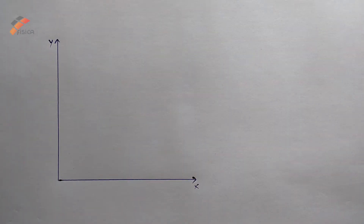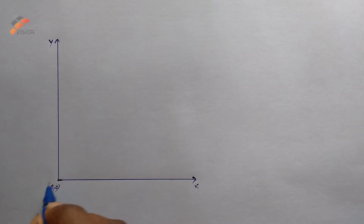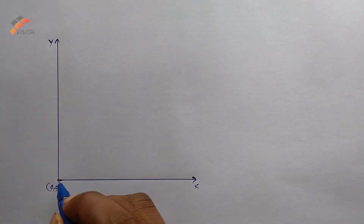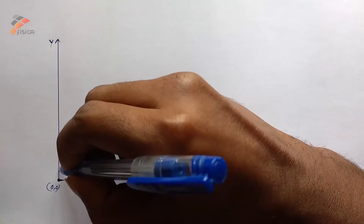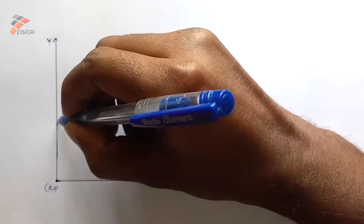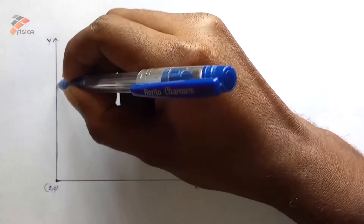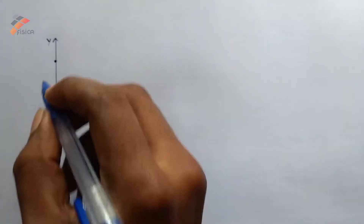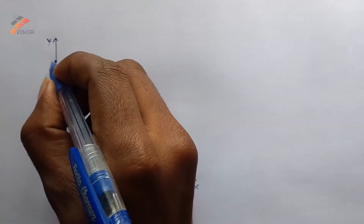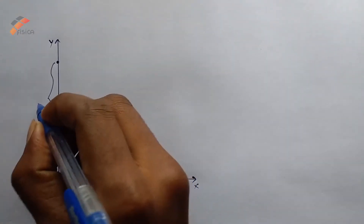This is the origin. The ant starts at the origin and moves along the y-axis, covering a distance — suppose L. Let this be the distance L. This is the first stage.